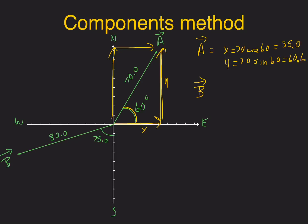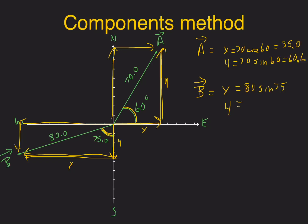Now let's look at vector b. I need to get the x and y components of vector b. I'm going to go down and over to the left, because I have the 75-degree angle inside there. The x component would be the opposite of 75, so it'd be 80 times the sine of 75. The y would be the adjacent side, so it would be 80 times the cosine of 75. That gives 80 sine of 75 = 77.3, and 80 cosine of 75 = 20.7. But this y is going down, so it needs a negative sign, and this x is going to the left, so it also has a negative sign.